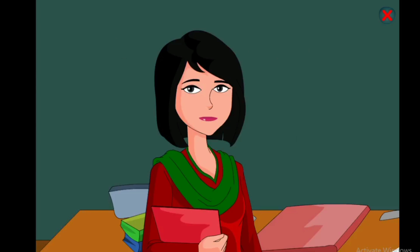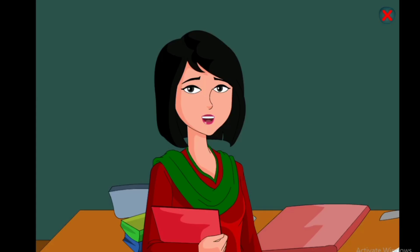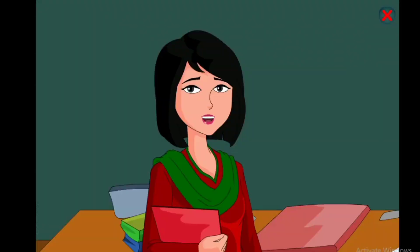Dhwani ya varn hi bhasha ki sabse choti ikaai hai. Inhi ke mel se shabd bante hain aur varnon ka samuh varnmala kehlata hai. Jante ho baccho, varnon ke tukde nahi ho sakte. Varnon ko do bhaagon mein vibhajit kiya jaata hai — swar aur vyanjan. Aao ab Hindi ki varnmala mein inhe dekhte hain.